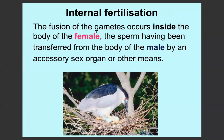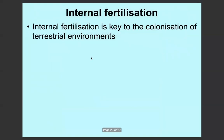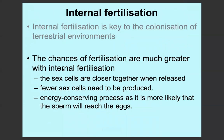For internal fertilisation, the fusion of the gametes occurs inside the female's body, and the sperm is transferred from the male body by an accessory sex organ or by other means into the female's body. Internal fertilisation is the key to the colonisation of terrestrial, non-aquatic environments. The chances of fertilisation are much greater because sex cells are much closer together when released, fewer sex cells need to be produced, which saves a lot of energy, because the sperm is much more likely to reach the eggs.